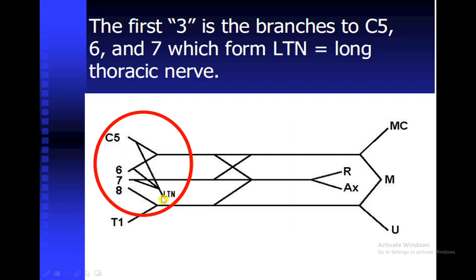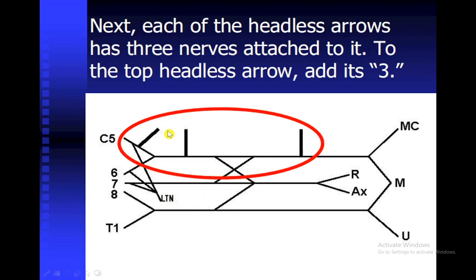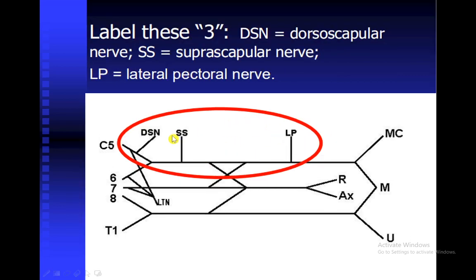Next we have another three on the upper arrow. Label them as DSN, representing the dorsal scapular nerve, SS representing the suprascapular nerve, and LP representing the lateral pectoral nerve.